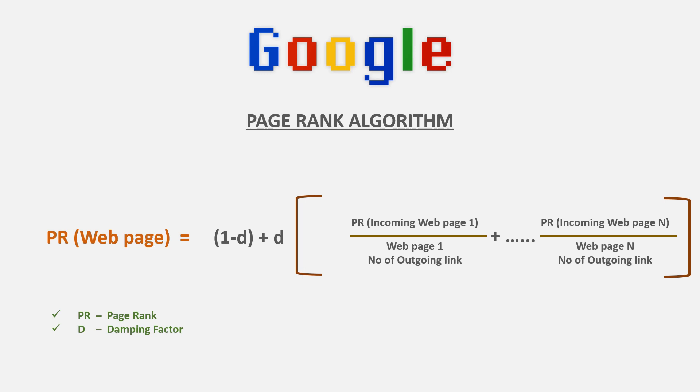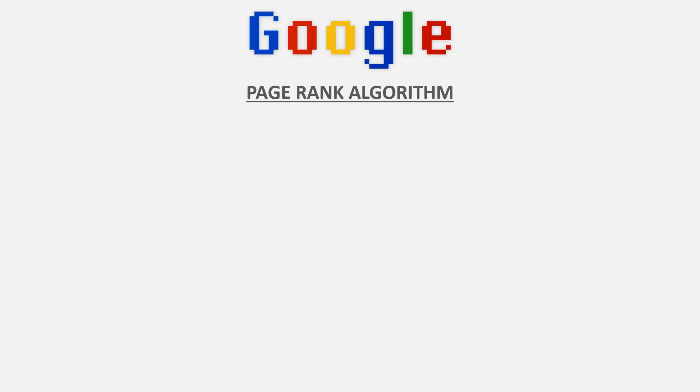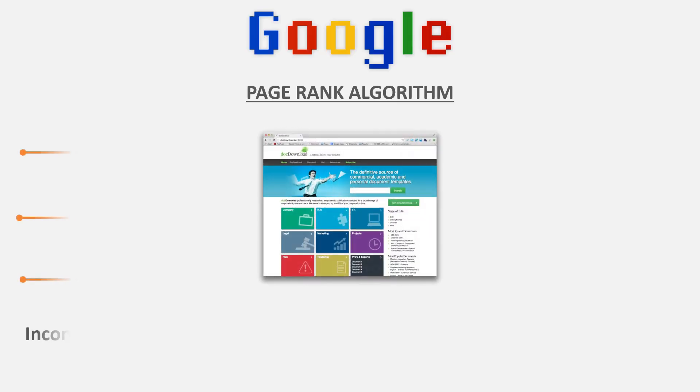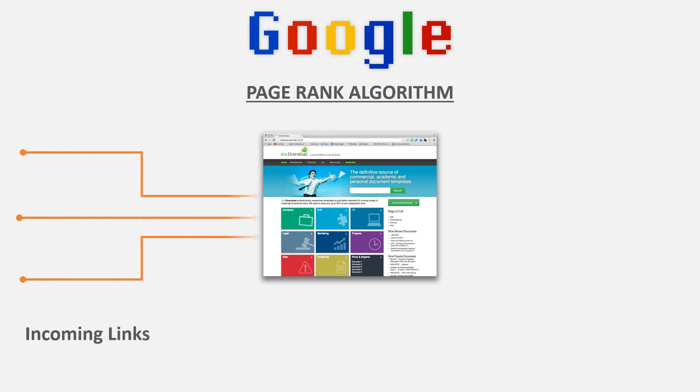Now, in this video we will talk about a small example. There are 50 billion webpages. In the simple PageRank algorithm, there are incoming links and outgoing links in webpages. Based on these webpages, we will talk about the page rank.